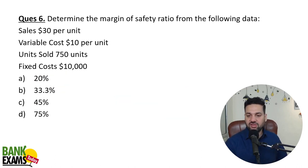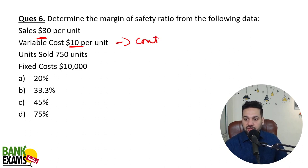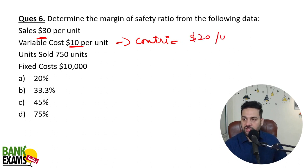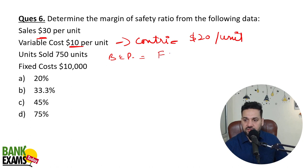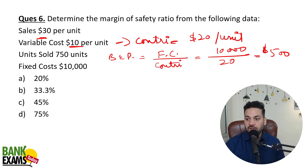Now determine the margin of safety — a very easy question, repeated multiple times in your exam. Sales price is $30 per unit, variable cost is $10 per unit. Contribution per unit is $30 minus $10 = $20. Break-even point is fixed cost of $10,000 divided by contribution of $20 = 500 units.